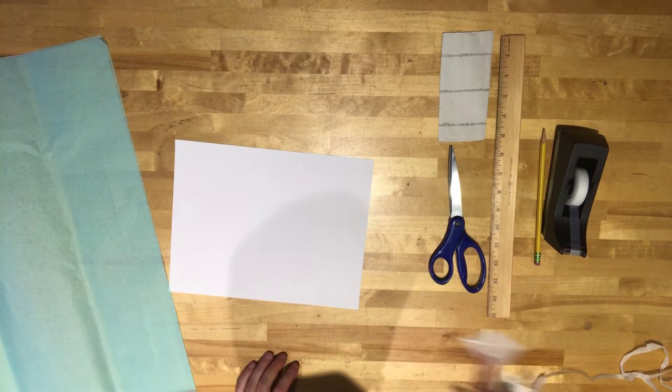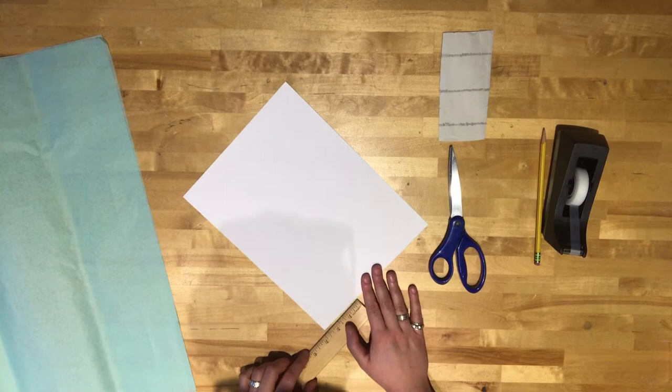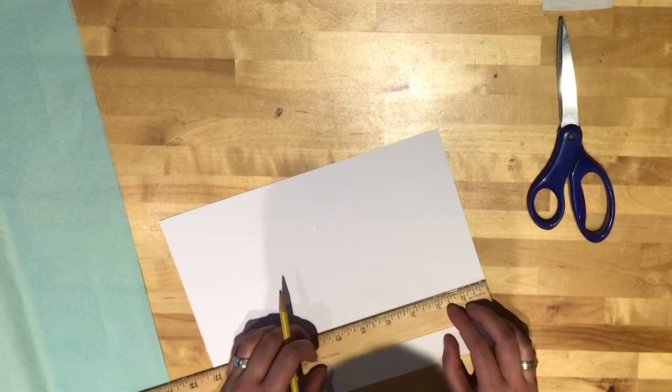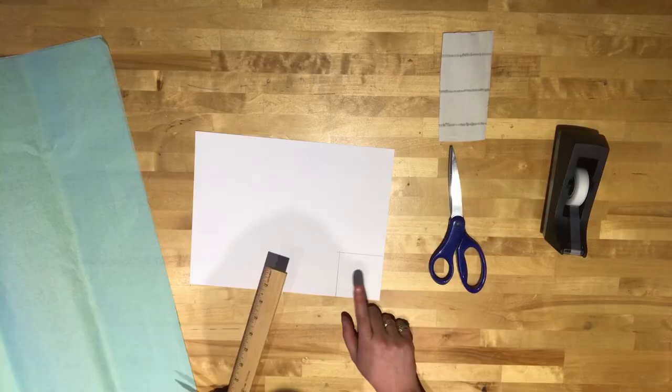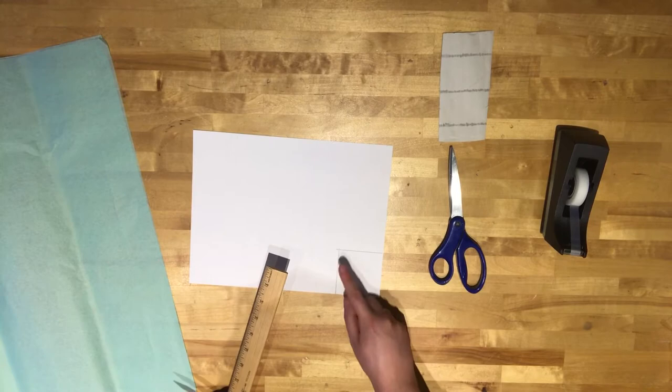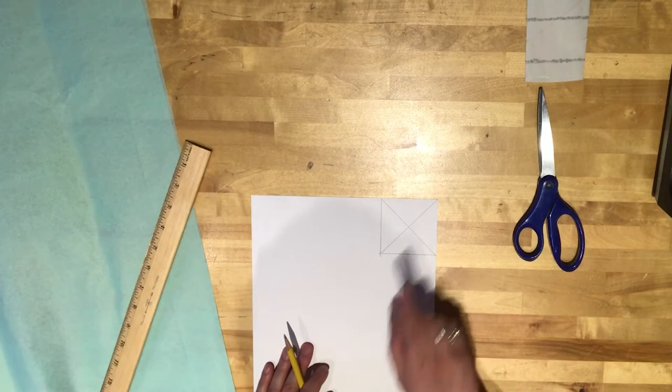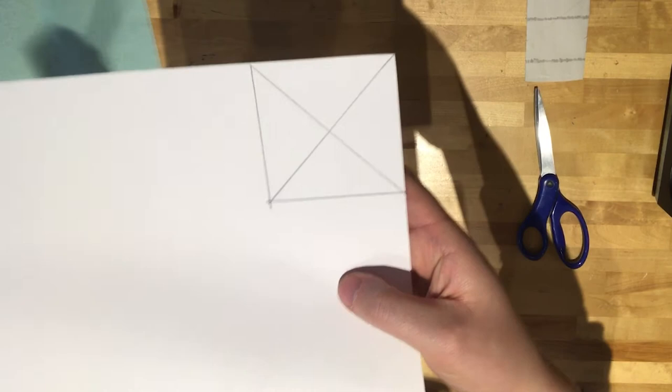The first step is to create a template for the shape of the kite, which is this diamond shape here. To do that we are going to measure a two and a half inch square in the corner of this paper. So that's two and a half inches from the corner out. I'm going to connect my dots to make my square. My next step is to find the center of the square by creating diagonal lines across it, just corner to corner. I'm just using the ruler so it's a straight line. Now I have a square with the center marked, as you can see here.